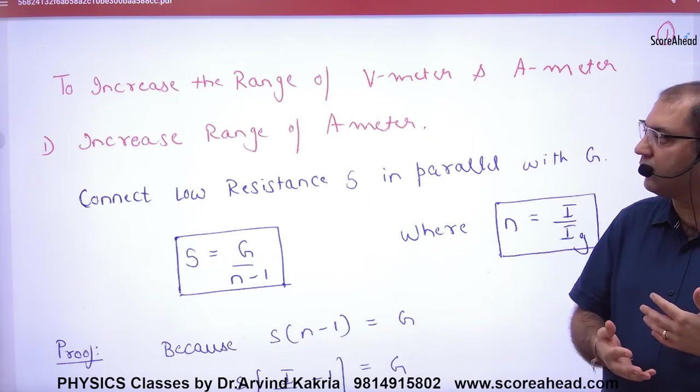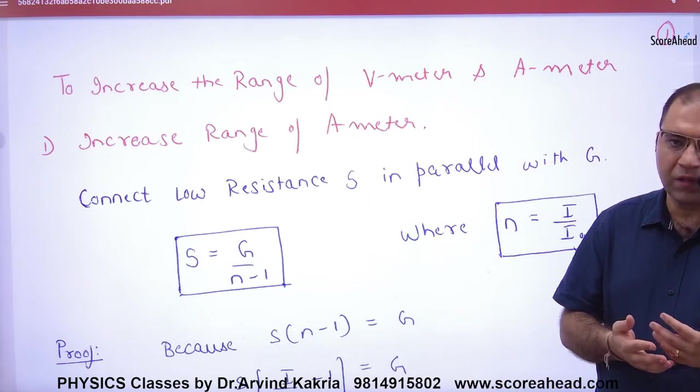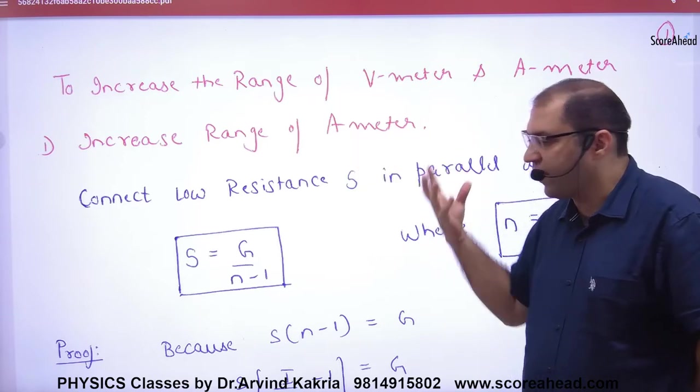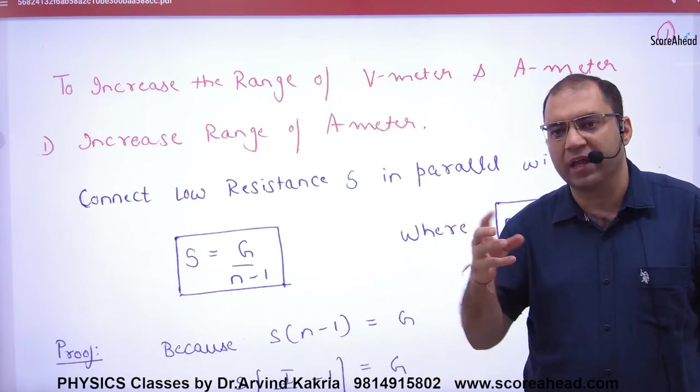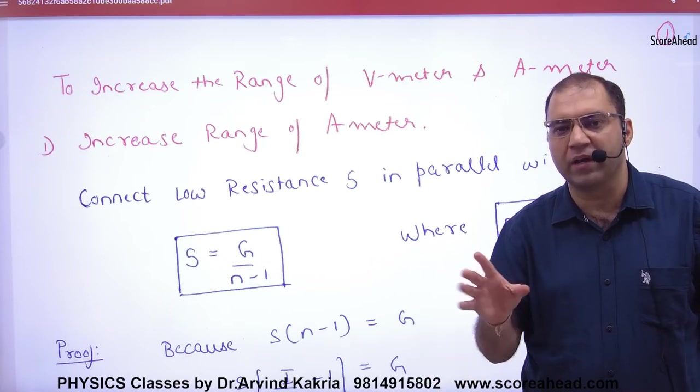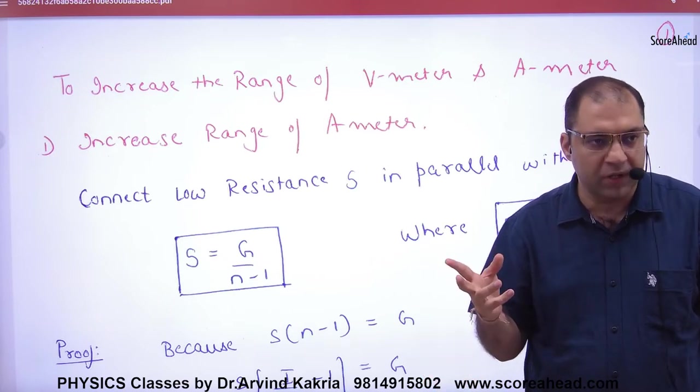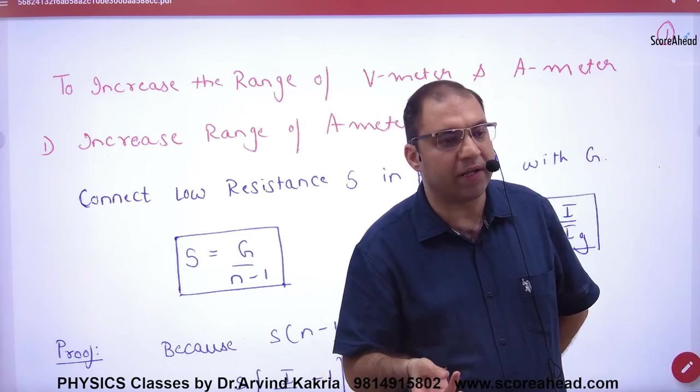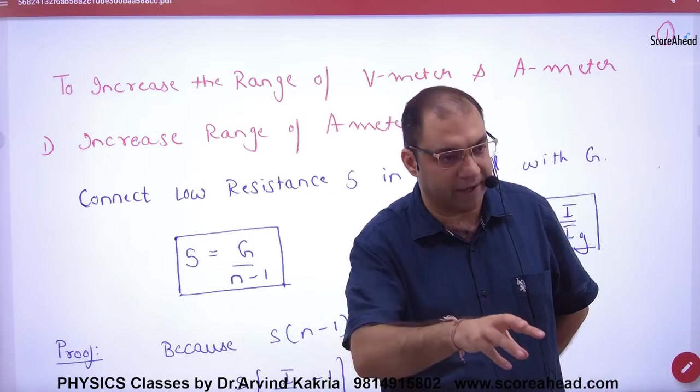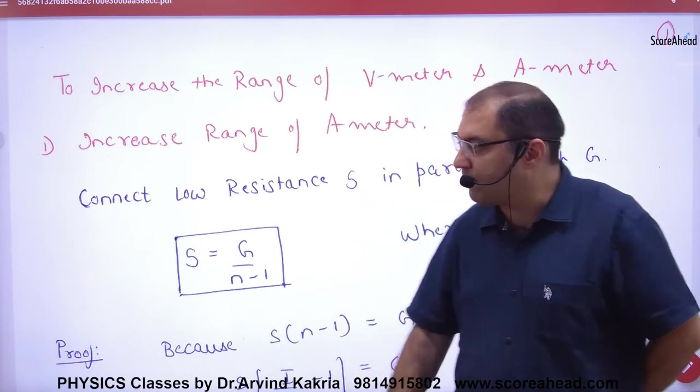Some places are written like this: if you want to increase the range of ammeter, it means you have a galvanometer with current IG, and you have to make an ammeter. That means you have to increase the range of ammeter. So what do you have to do? The range is I, so from IG you put shunt.